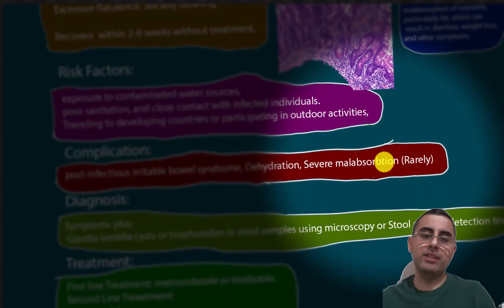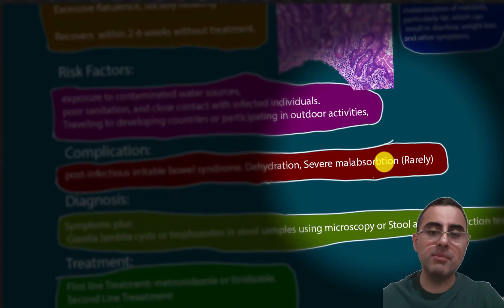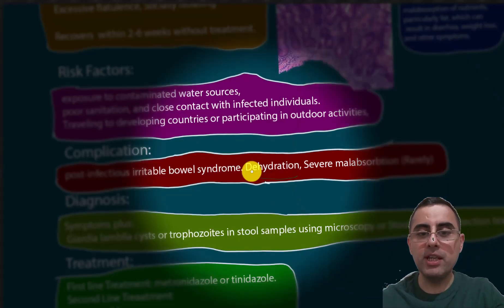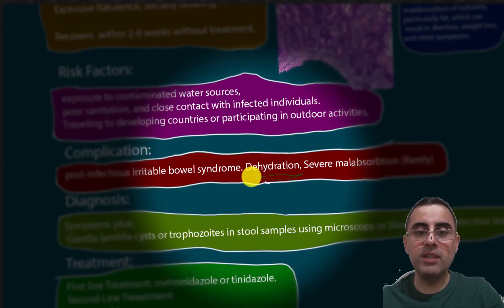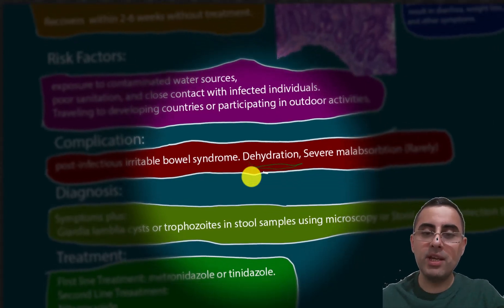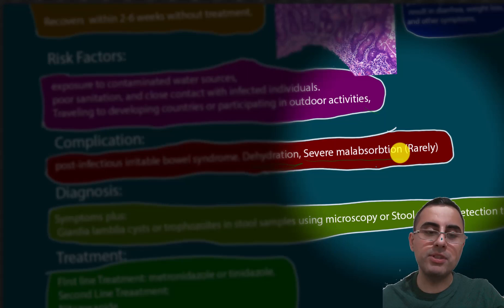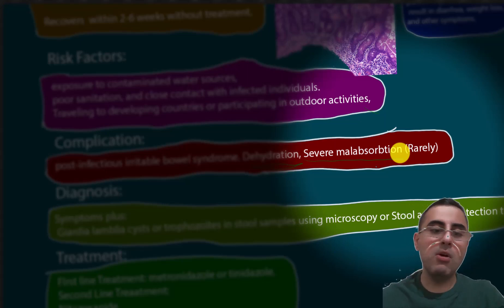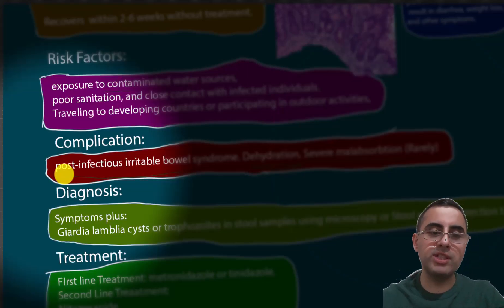Complications are rare and the disease usually has no major complications. However, dehydration can be severe, especially in persons with a compromised immune system, and severe malabsorption can sometimes occur. Post-infectious irritable bowel syndrome also occurs in some cases.